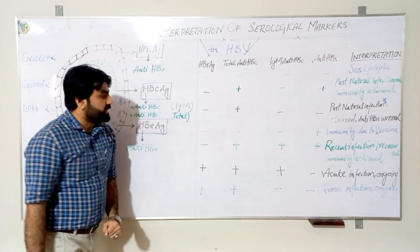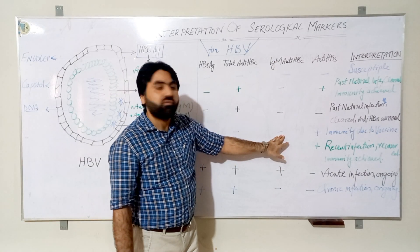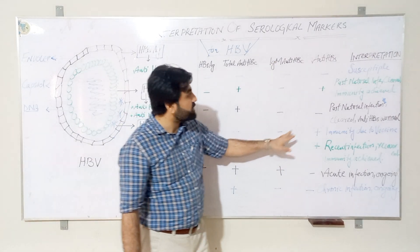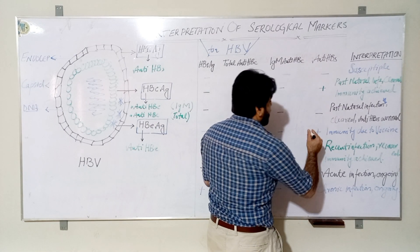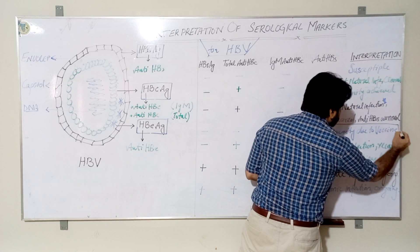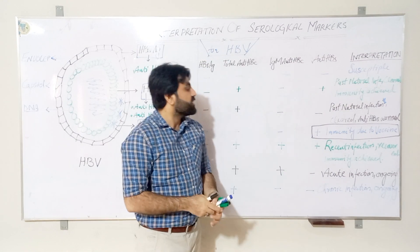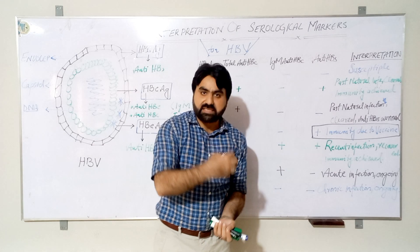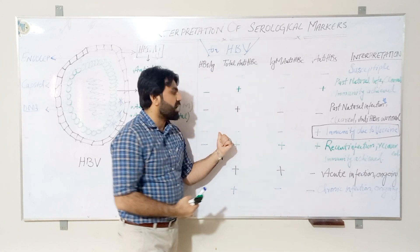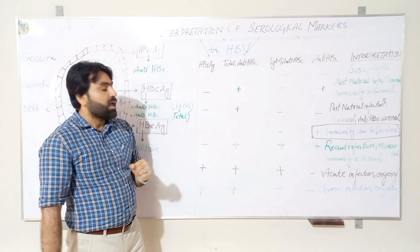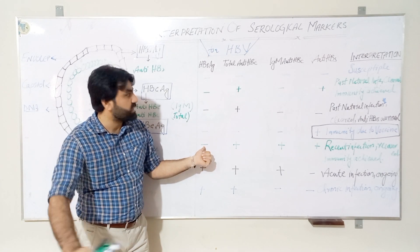Third condition: if a person is negative for HBsAg, negative for total anti-HBc, negative for IgM anti-HBc, and positive for anti-HBs, this means the person is immunized due to vaccination. In simple words, this person has been vaccinated against hepatitis B virus.